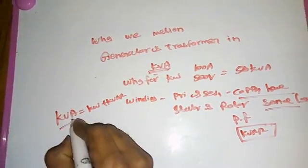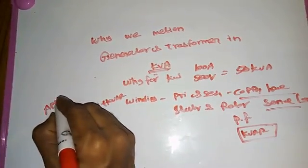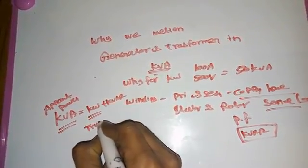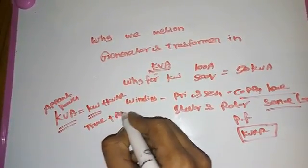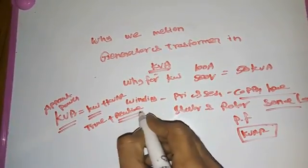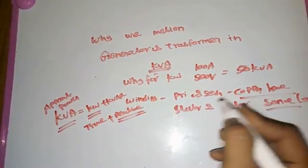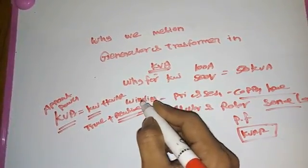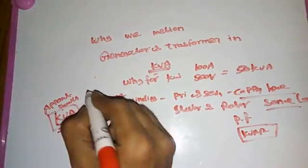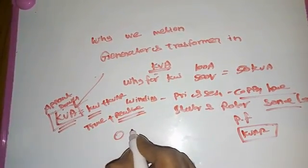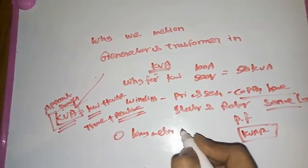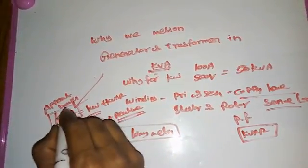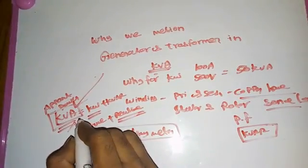KVA is apparent power. KW is true power, or real power. KVAR is reactive power. Reactive power is very important because the coil windings have copper losses, insulation losses, and winding losses. These are the losses available in our transformer and generator. No zero-loss material has been invented yet, so that's why we always mention generators and transformers in KVA.